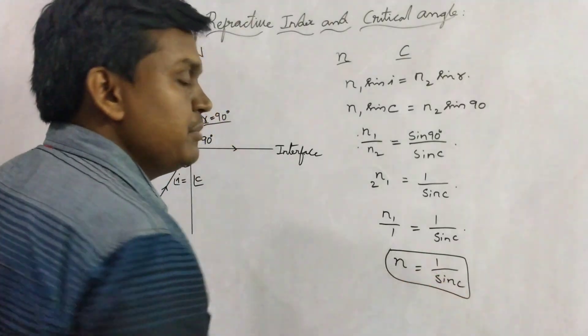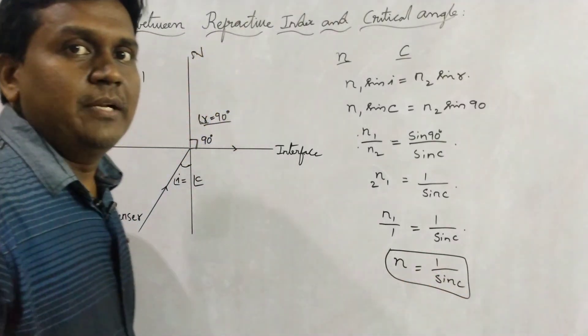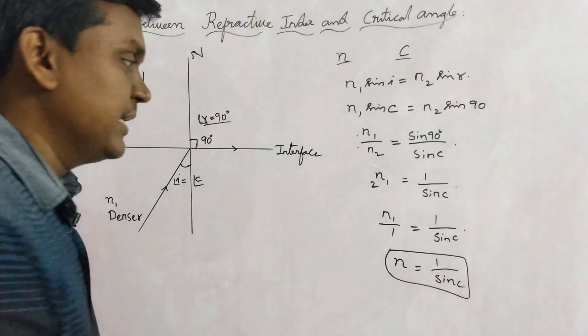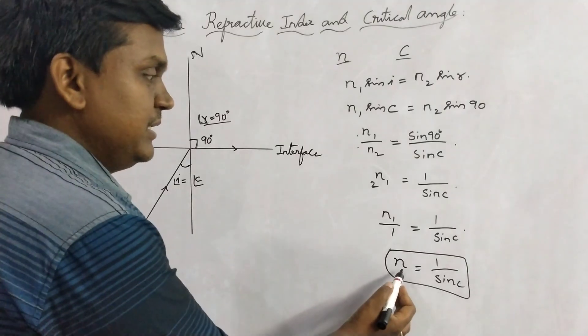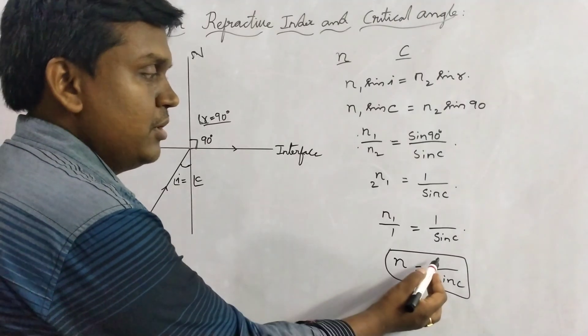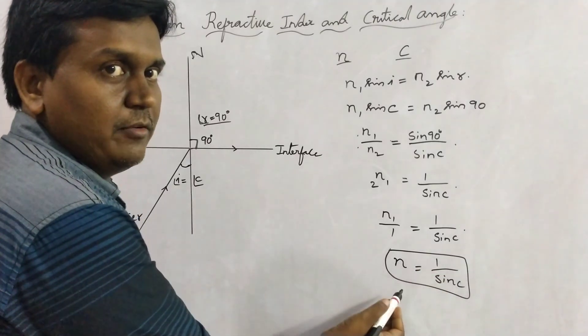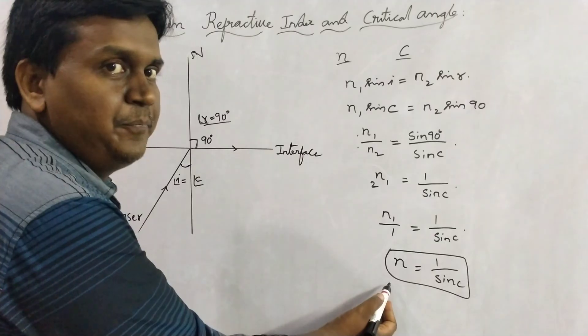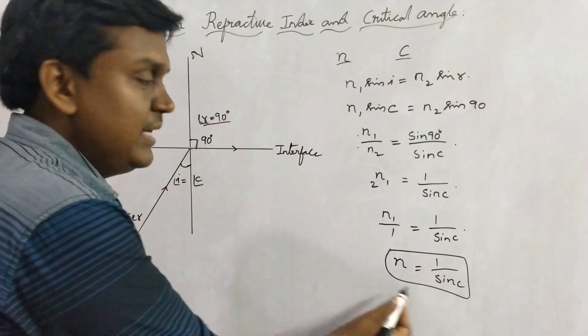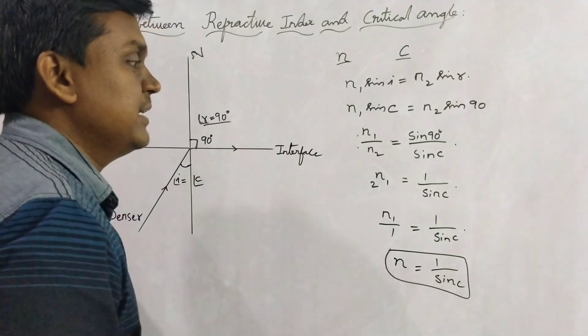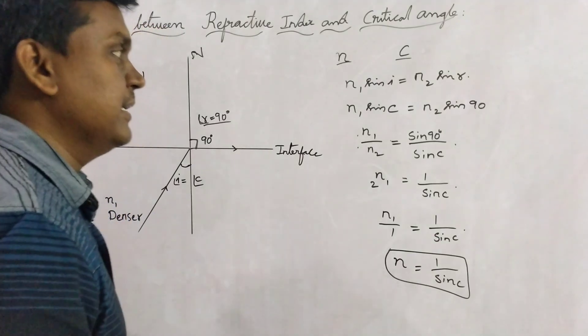So N equals 1 by sin C. This is the relation between refractive index and critical angle, where N is the refractive index and C is the critical angle.